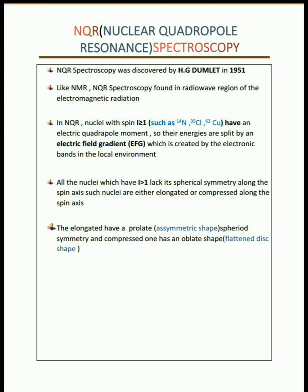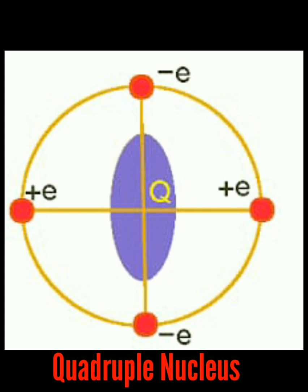NQR spectroscopy is used to study the electronic environment around the quadrupolar nucleus. What do we mean by a quadrupolar nucleus? A pole is an area where charge is accumulated. A dipole consists of two poles, or two charges, separated by a distance. A quadrupole has four poles — two plus charges and two minus charges. As a result, there is a departure from the spherical nature.